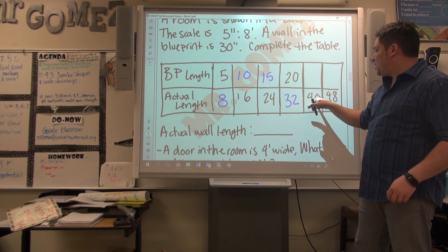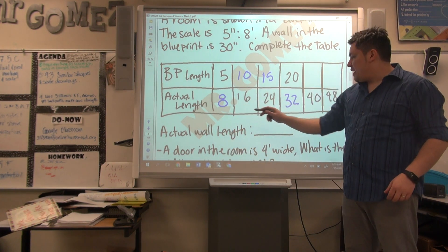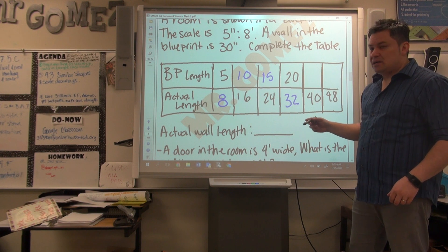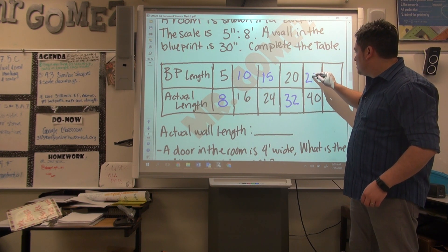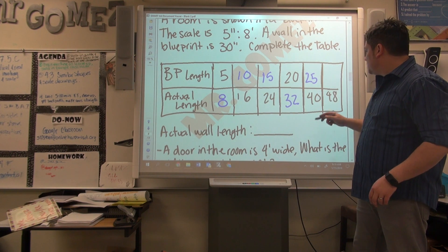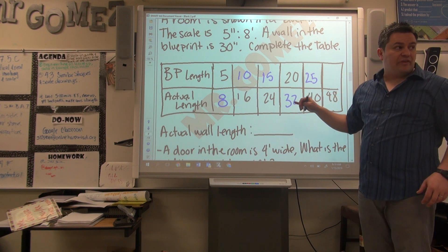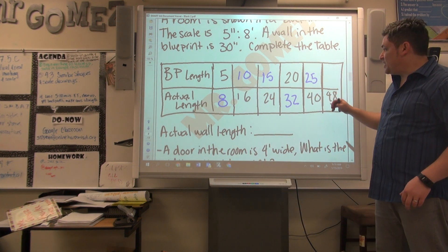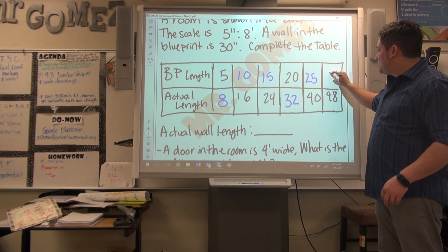Now right here we have 40, so you have to divide it by 8. The scale factor of 40 divided by 8 is 5, which gives us 25. And then 48 right here is going to be how many sets of 8? 6 times 5 is 30.